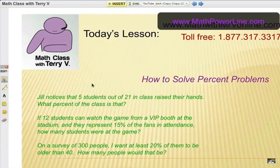Or, if 12 students can watch the game from a VIP booth at the stadium and they represent 15% of the fans in attendance, how many students were at the game? And the last example is on a survey of 300 people, I want at least 20% of them to be older than 40. How many people would that be?